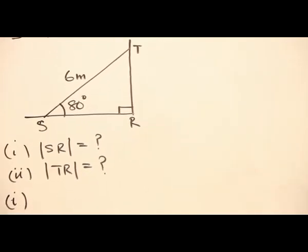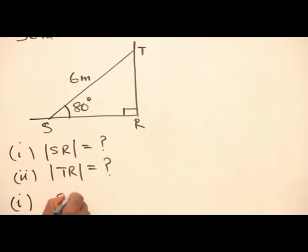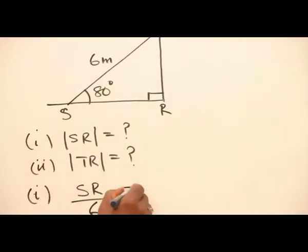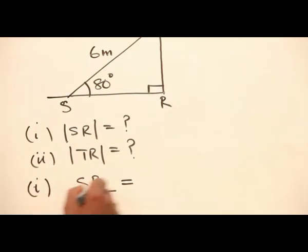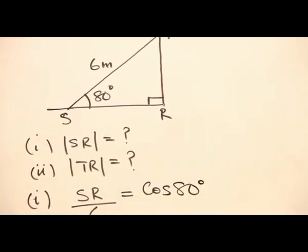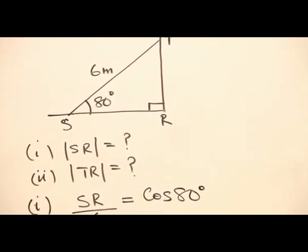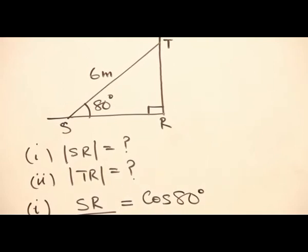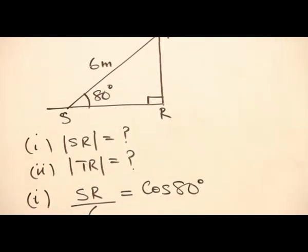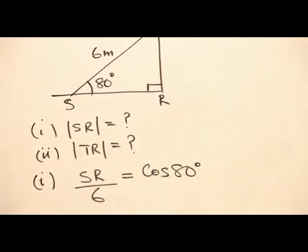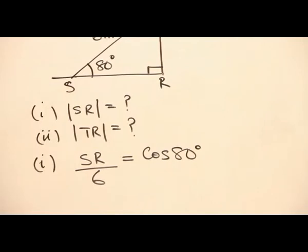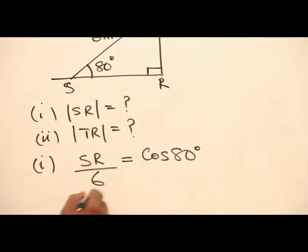To find SR, we say SR over 6 is equal to cos 80 degrees. You will recall the mnemonic SOHCAHTOA that helps us to recall the three trig ratios.